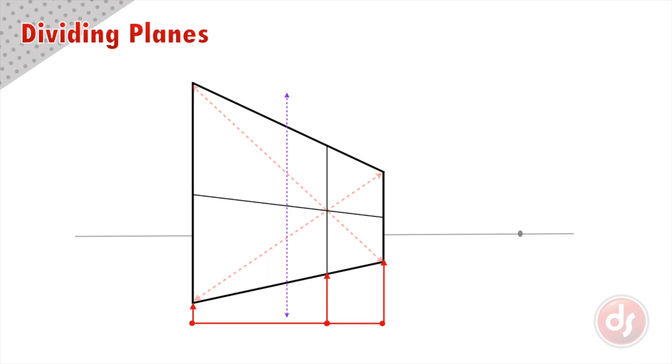When you draw planes in perspective, remember that the center line will be offset so there is more space on the side closer to the viewer. We can use the X-trick to keep dividing in perspective.